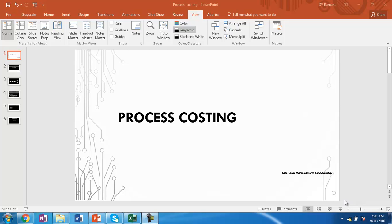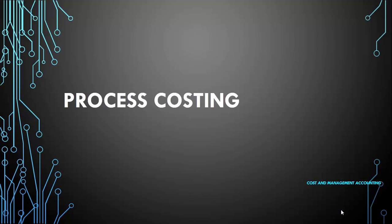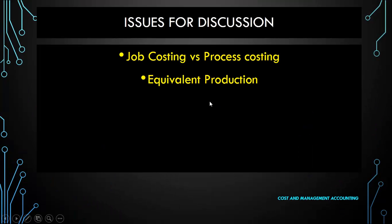Hello and welcome to our discussion on cost and management accounting. The focus of this session is process costing. We are going to see the details of how cost is accumulated in process costing. We already have seen that in job costing, costs are accumulated as per a particular job, whereas in process costing the cost is accumulated over the processes. We will also see the concept of equivalent production.